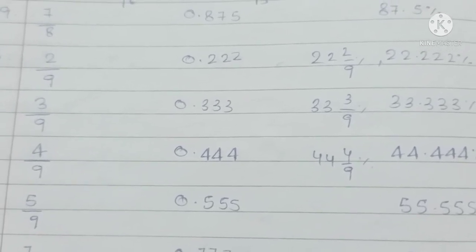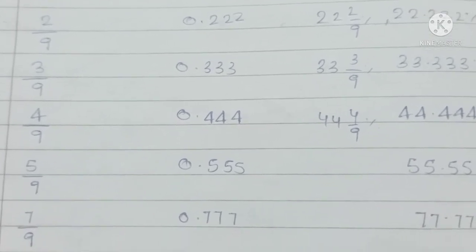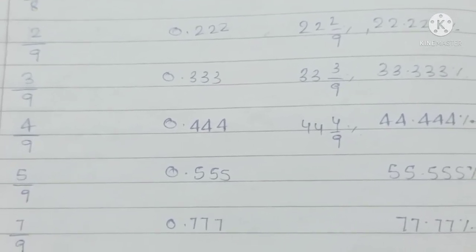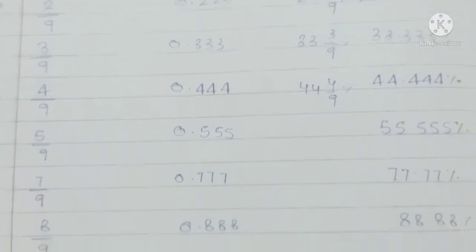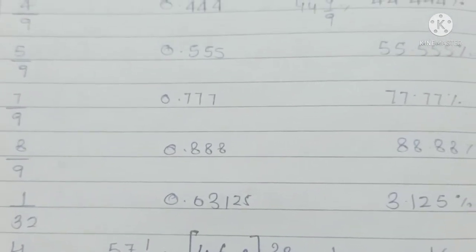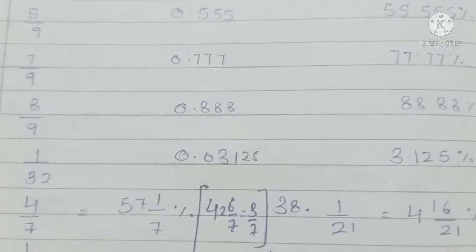2/9 is 22.22%. 3/9 is 33.33%. 4/9 is 44.44%. 5/9 is 55.55%. 6/9 is 66.66%. Then 1/32 is 3.125%. 4/7 is 57 1/7, 3/7 is 42, 6/7...